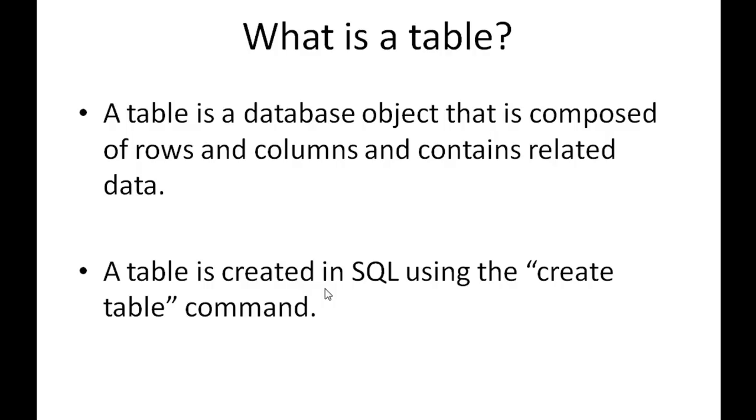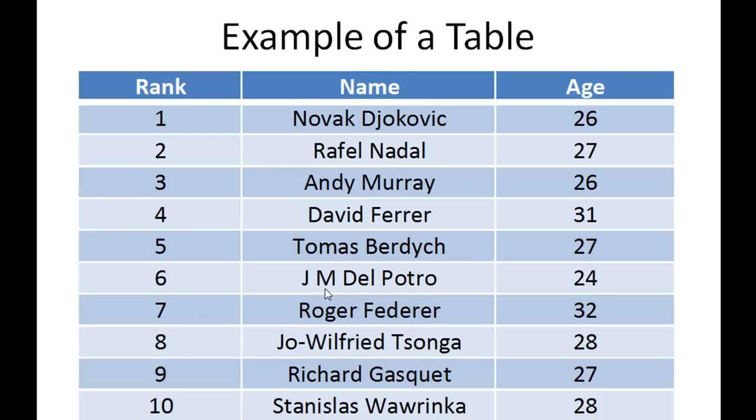In the next slide I have an example of a table for you guys. This table has information about tennis players and their rankings. You have three fields: the first one is called rank, the second one is name, and the third one is age.